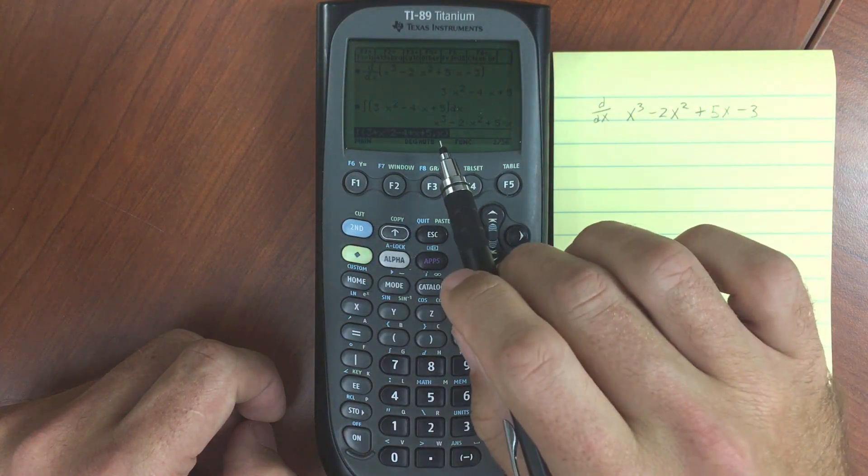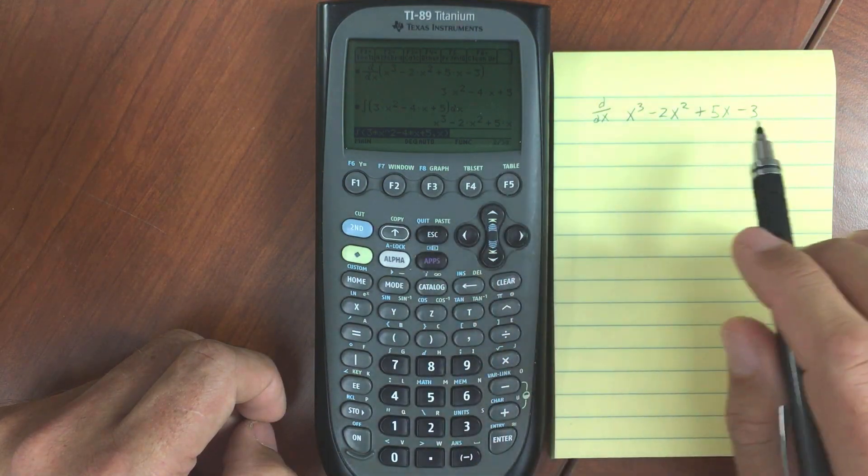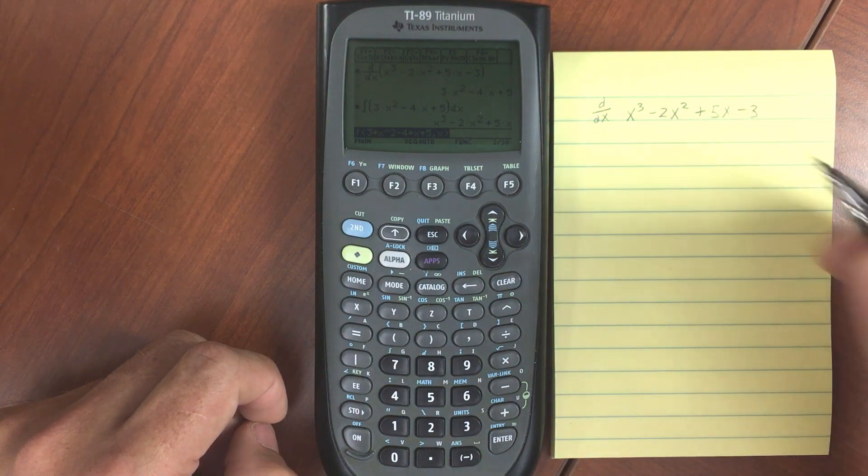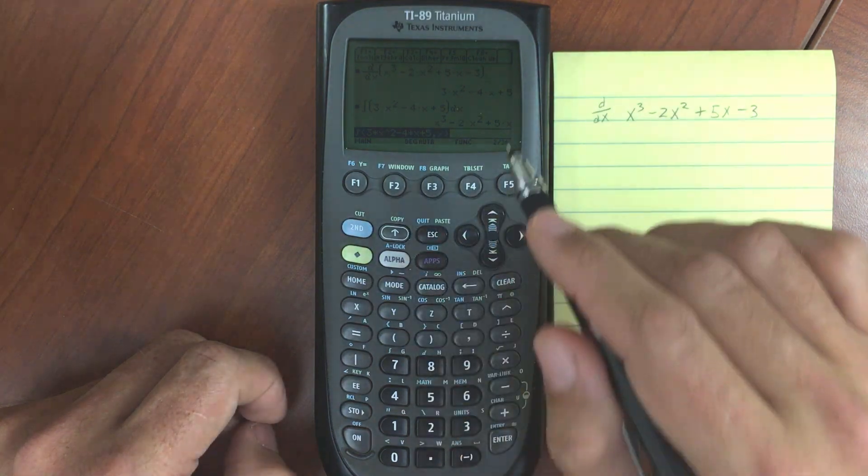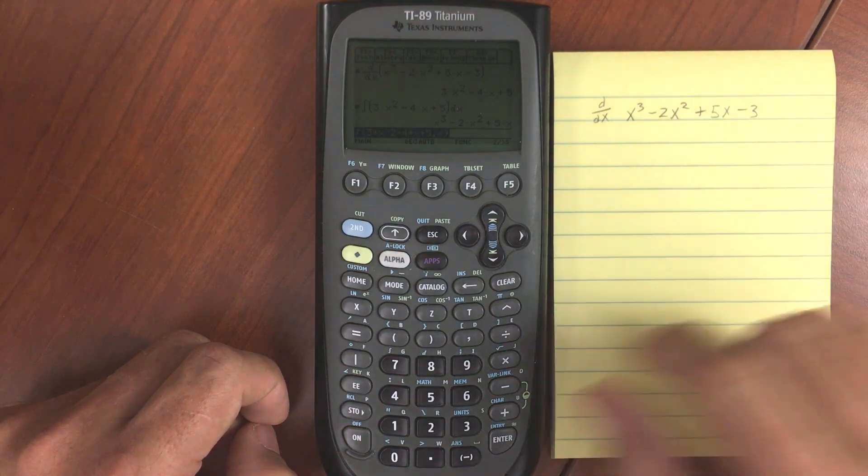So we get x cubed minus 2x squared plus 5x. What would happen to our minus 3? Well, when we integrate we're always going to have some kind of a constant. Remember when you integrate symbolically like this, you always are going to have that plus c.